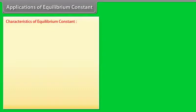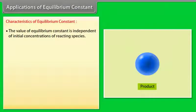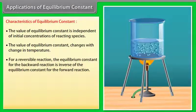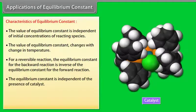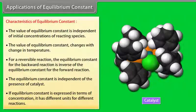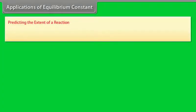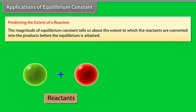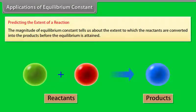Applications of the Equilibrium Constant — Characteristics: The value of the equilibrium constant is independent of initial concentrations of reacting species, but changes with temperature. For a reversible reaction, the equilibrium constant for the backward reaction is the inverse of that for the forward reaction. The equilibrium constant is independent of the presence of a catalyst. The magnitude of the equilibrium constant tells us the extent to which reactants are converted into products before equilibrium is attained.